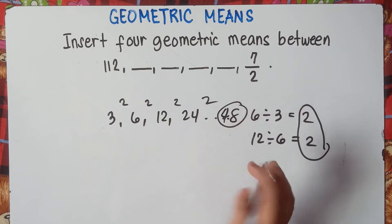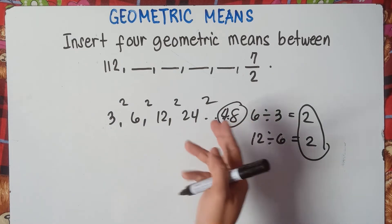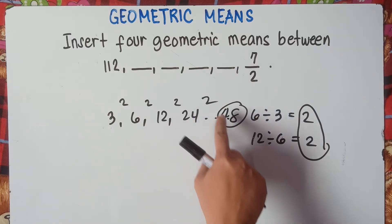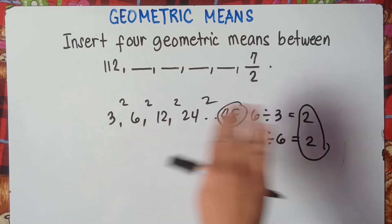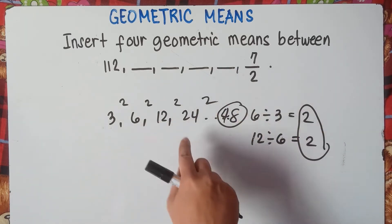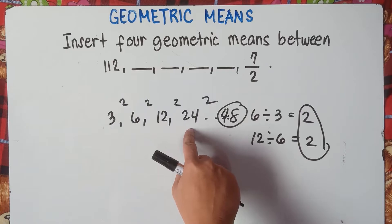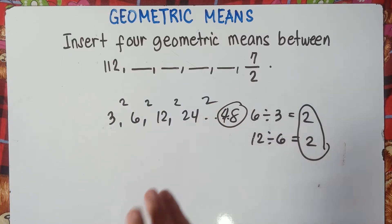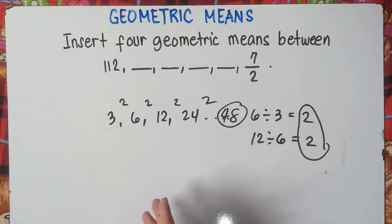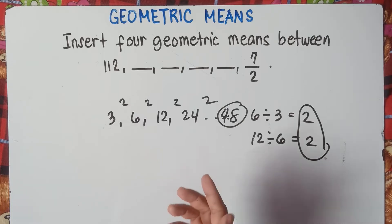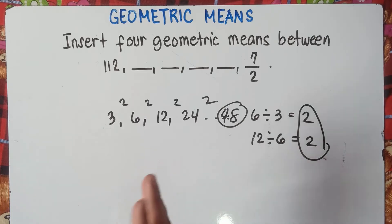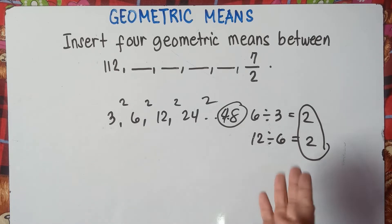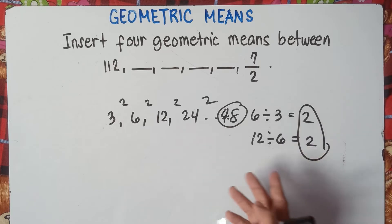Check this: 6 divided by 2 is 3. Now to get the next number, you do it in reverse — you multiply. So 3 times 2 is 6, 6 times 2 is 12, 12 times 2 is 24, 24 times 2 is 48. Once you get the common ratio in Geometric Means, you do it reverse — you multiply.